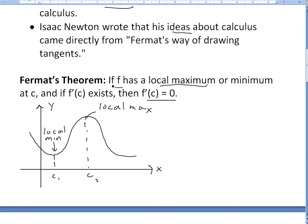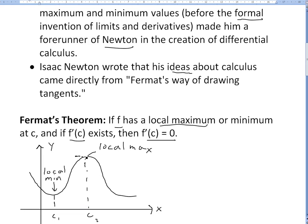What this theorem is saying is that at these points — at this local maximum, given that the derivative exists — the slope, or the derivative, is just going to be a flat line, meaning the derivative is 0. The slope is 0 at this point, and even at the bottom local minimum. You can see visually why it's true.